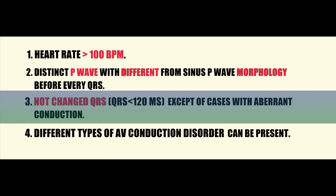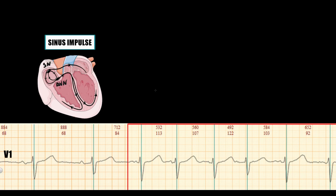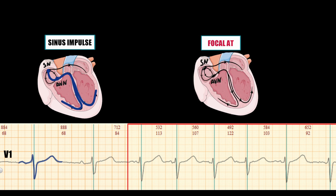The next criterion is QRS complex. In normal conduction, the impulse from the sinus node depolarizes the atria, then passes through the AV node and depolarizes the ventricles. In focal atrial tachycardia, the atria are depolarized differently — explaining the changed P-wave morphology — but from the AV node, depolarization proceeds as usual, which explains the unchanged QRS complex.